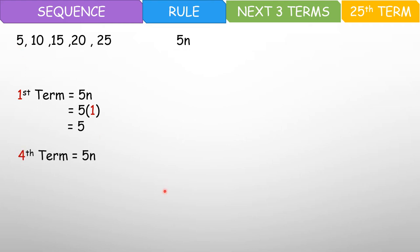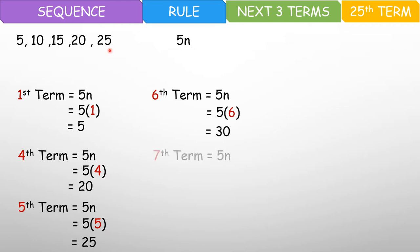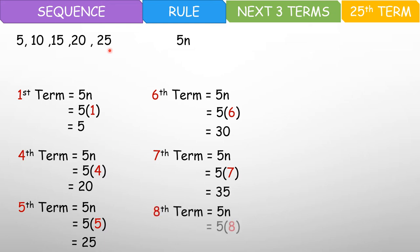Let's have the fourth term. So palit natin yung 4 dito sa n. So that is 5 times 4, and that is 20. Tama ba? First, second, third, fourth — tama yung sagot natin. And then fifth term, you have 5n and 5 times 5, and that is 25. Ito na yung fifth term natin. Tama nga, diba? So the next three terms would be the sixth. Substitute ulit — times 6, that is 30. Seventh term — substitute ulit yung 7, and you have 35. And then eighth term — substitute natin, that is 5 times 8, and you have 40.